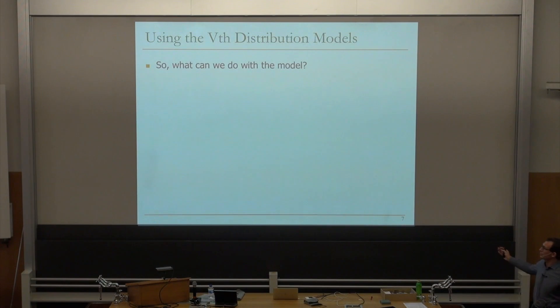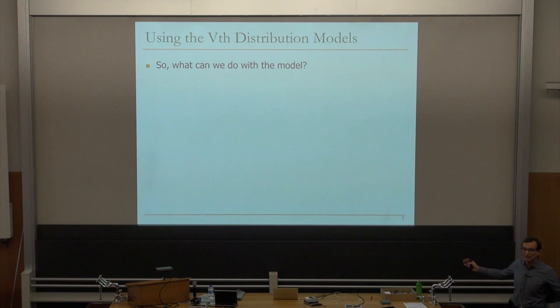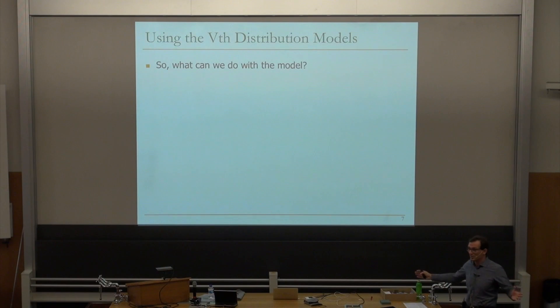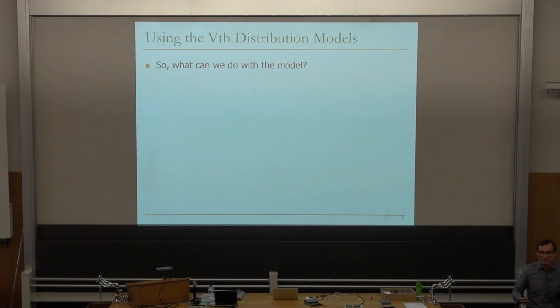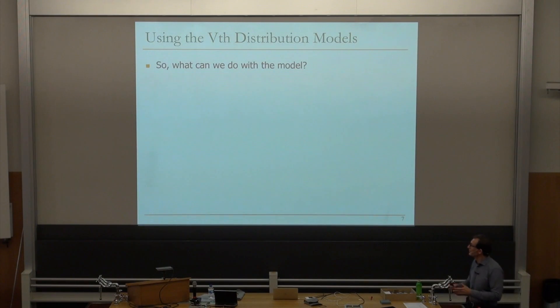We developed models for threshold voltage distribution. The threshold voltage determines the value stored in a flash cell. You have a threshold voltage range, and you chop it up into smaller sub-ranges. Each sub-range encodes a data value. In MLC multi-level cell NAND flash, it could be 00, 01, 10, 11 — 2-bit flash.